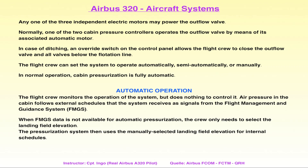Wenn wir das alles manuell regeln müssten, wäre das nicht nur sehr kompliziert, sondern die Passagiere würden es am Trommelfell merken – das würden die einmal machen und dann genug mit Fliegen haben. Der Automatik-Bereich ist der Standard-Bereich. Wir haben aber auch noch zwei weitere Zustände: den semi-automatischen Modus und den vollständig manuellen Modus.